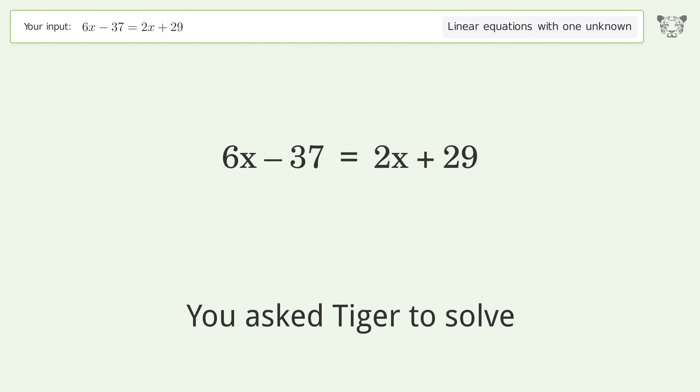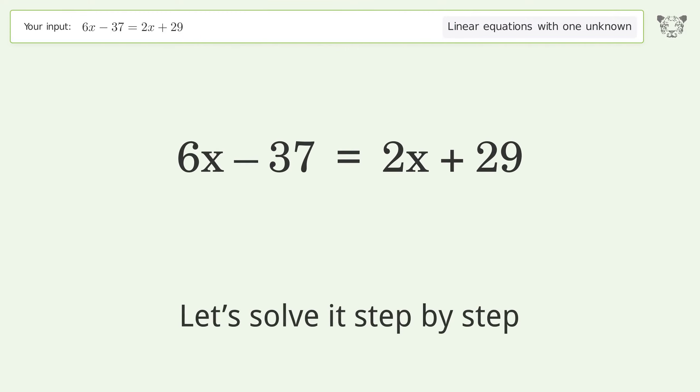You asked Tiger to solve. This deals with linear equations with one unknown. The final result is x equals 33 over 2. Let's solve it step by step.